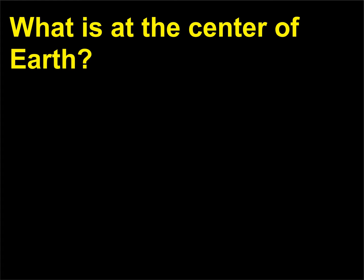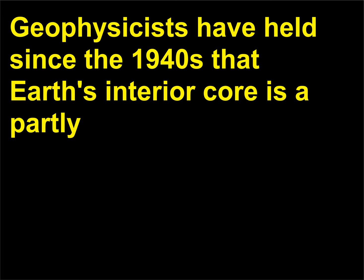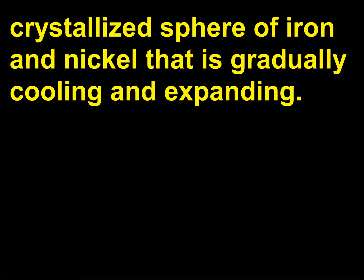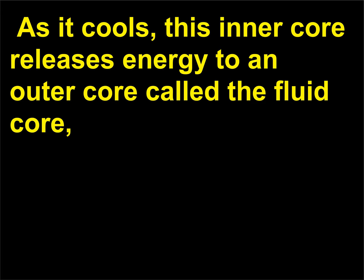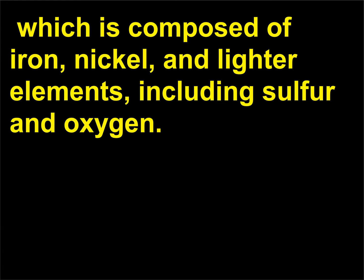What is at the center of Earth? Geophysicists have held since the 1940s that Earth's interior core is a partly crystallized sphere of iron and nickel that is gradually cooling and expanding. As it cools, this inner core releases energy to an outer core called the fluid core, which is composed of iron, nickel, and lighter elements, including sulfur and oxygen.